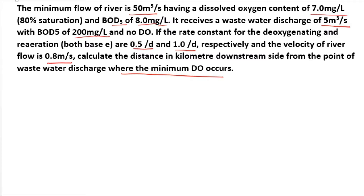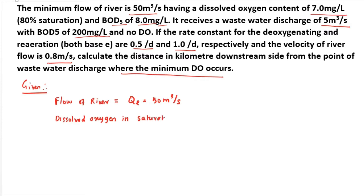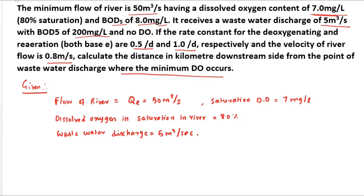We have to find the self-purification distance on the downstream side of the river. First, we write the given data: flow of river Q = 50 MQ per second; dissolved oxygen saturation in river = 80%; saturation DO at 20°C = 7 mg/L; wastewater discharge = 5 meter cube per second; BOD after 5 days at 20°C, C_R = 8 mg/L; velocity of flow = 0.8 meter per second.